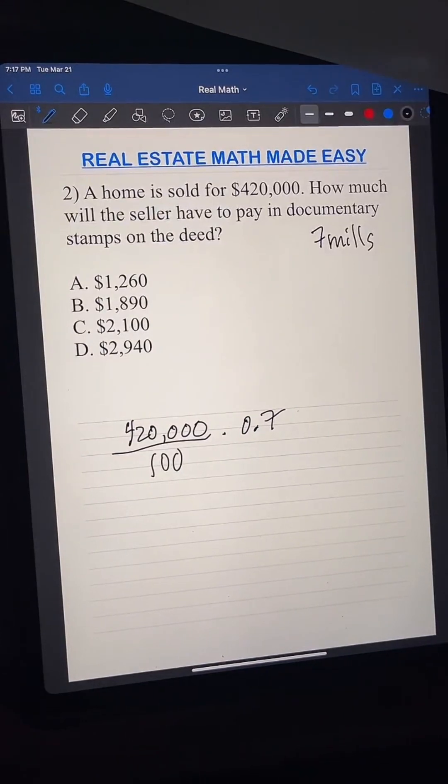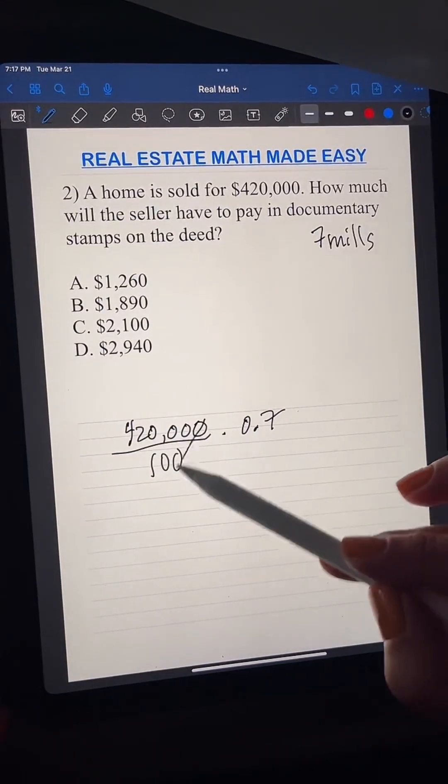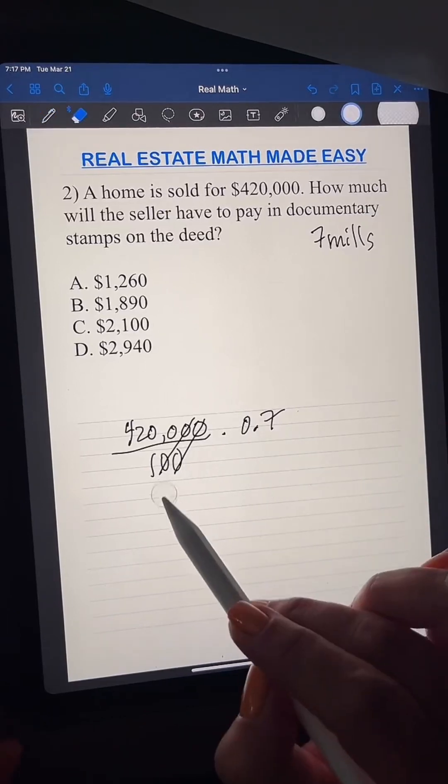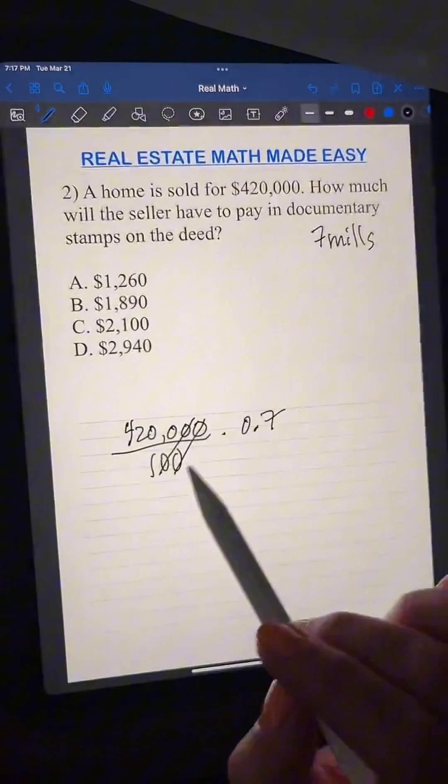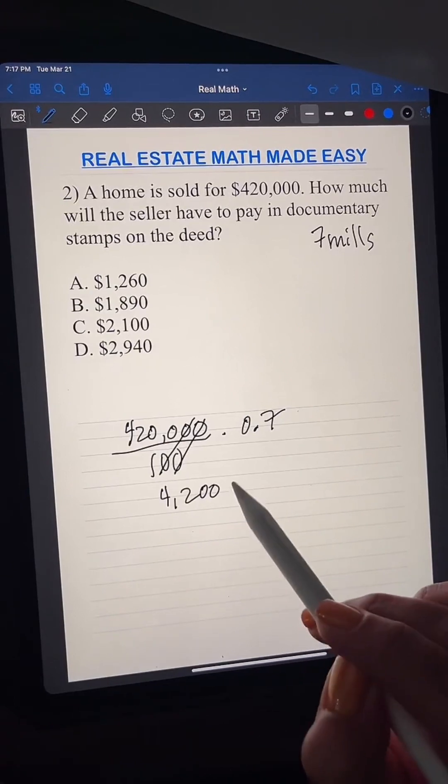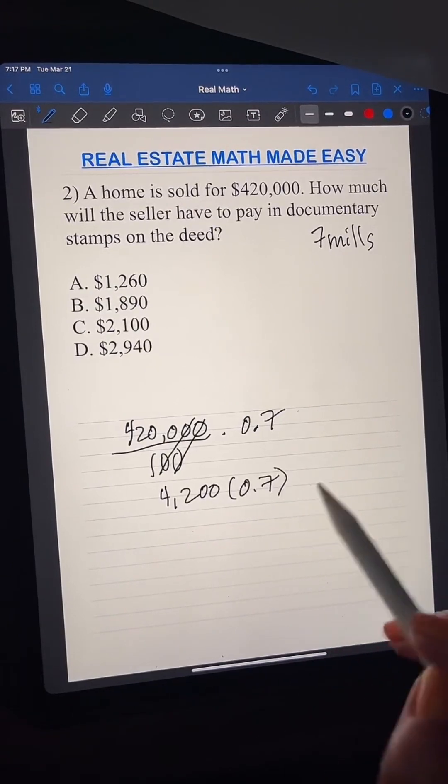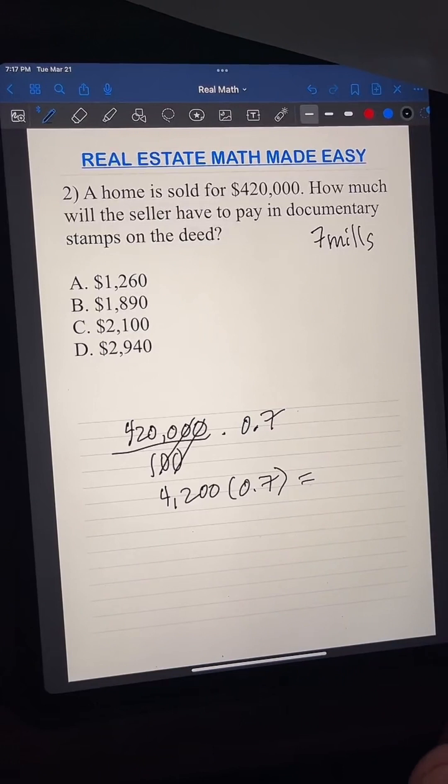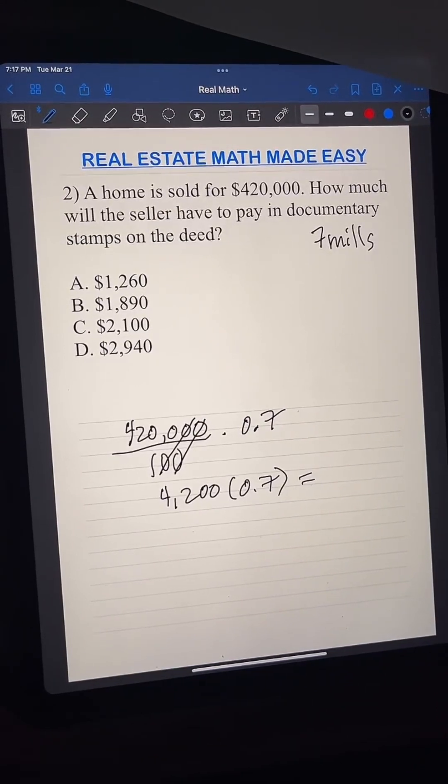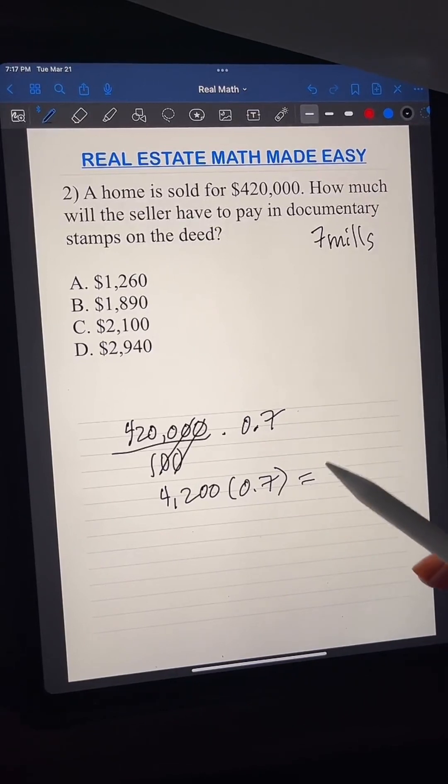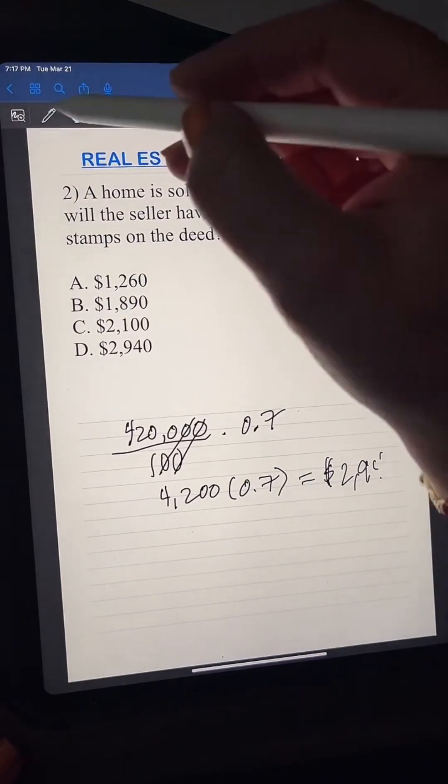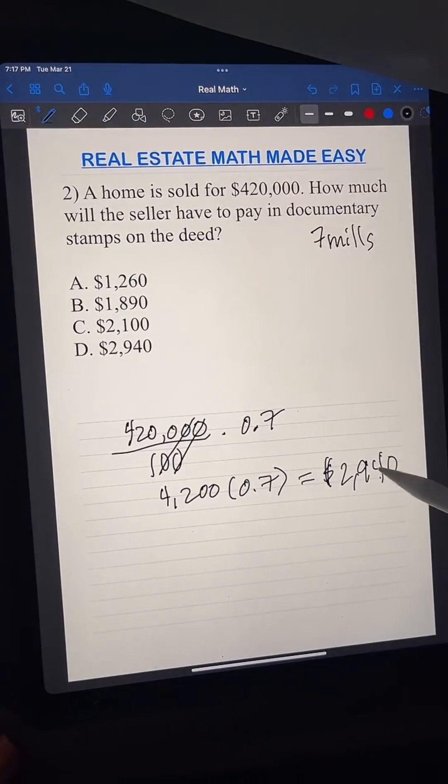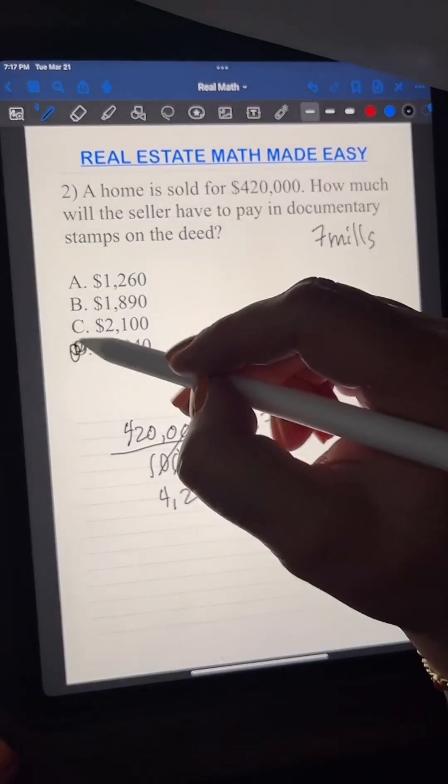So when you divide that, you could literally cancel these zeros out. You're left with 4,200 times the 7 mils. So 4,200 times 0.7 is going to give me $2,940. Sorry, that came out really nasty. $2,940. So the answer has to be D.